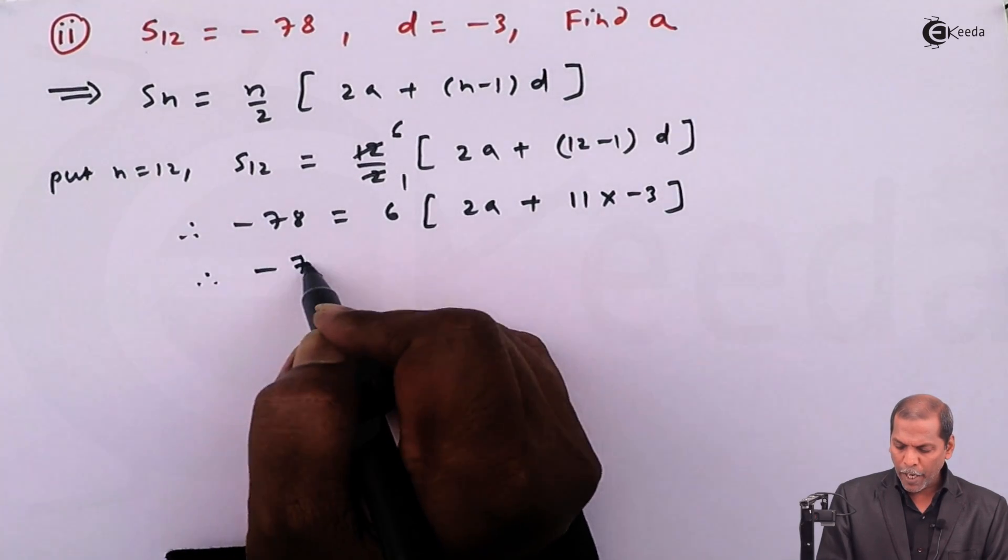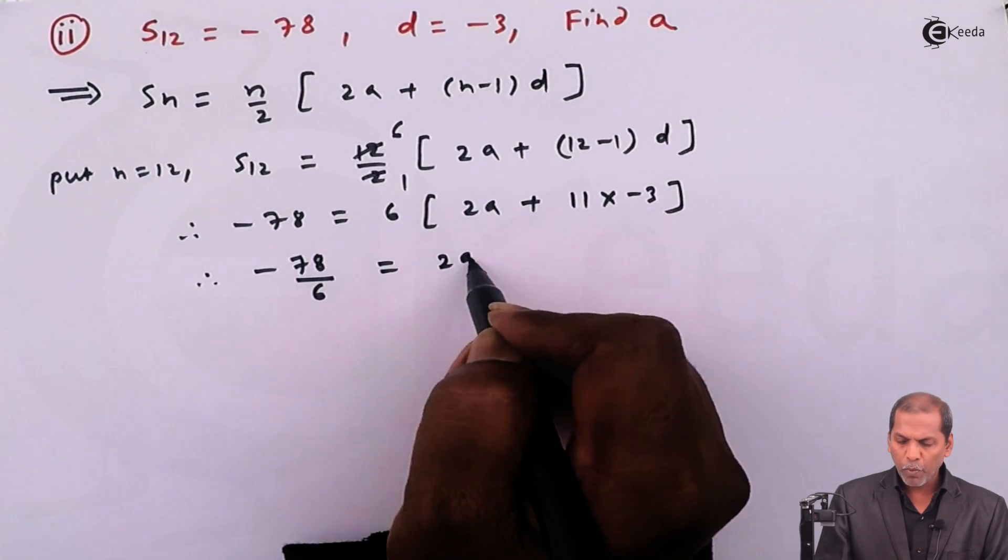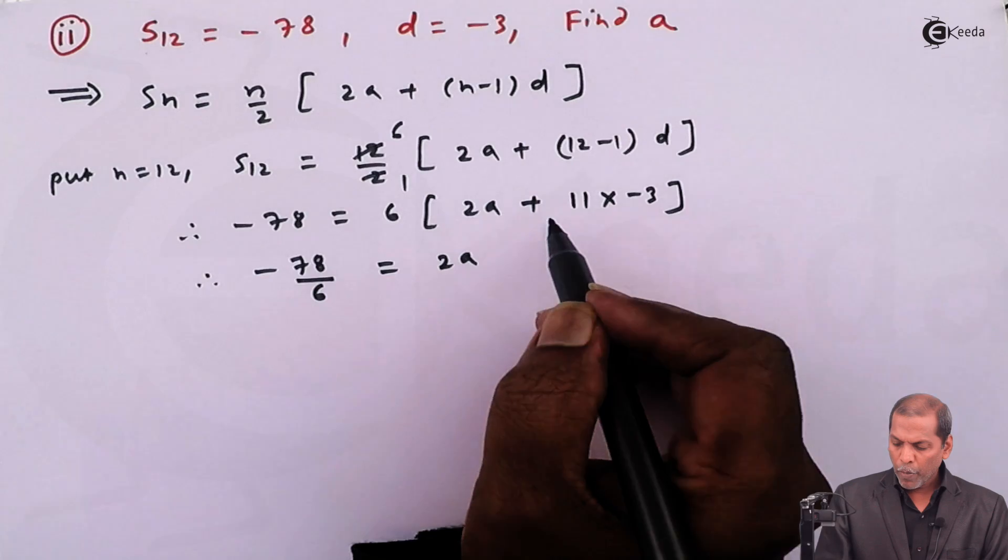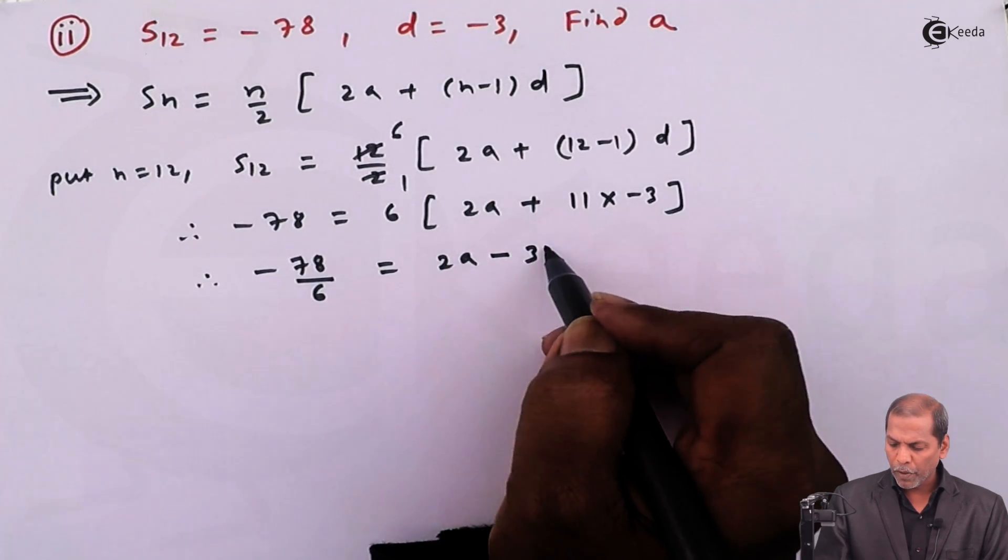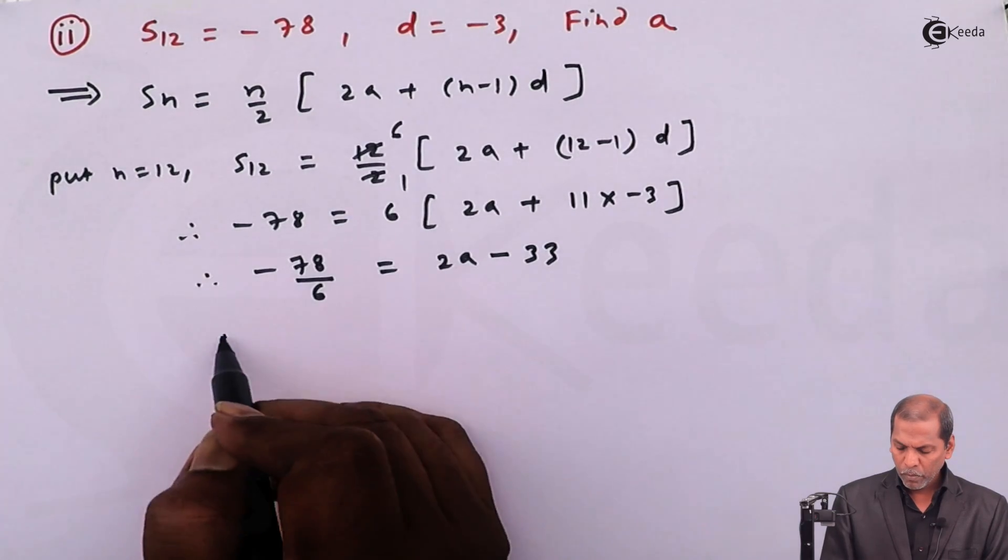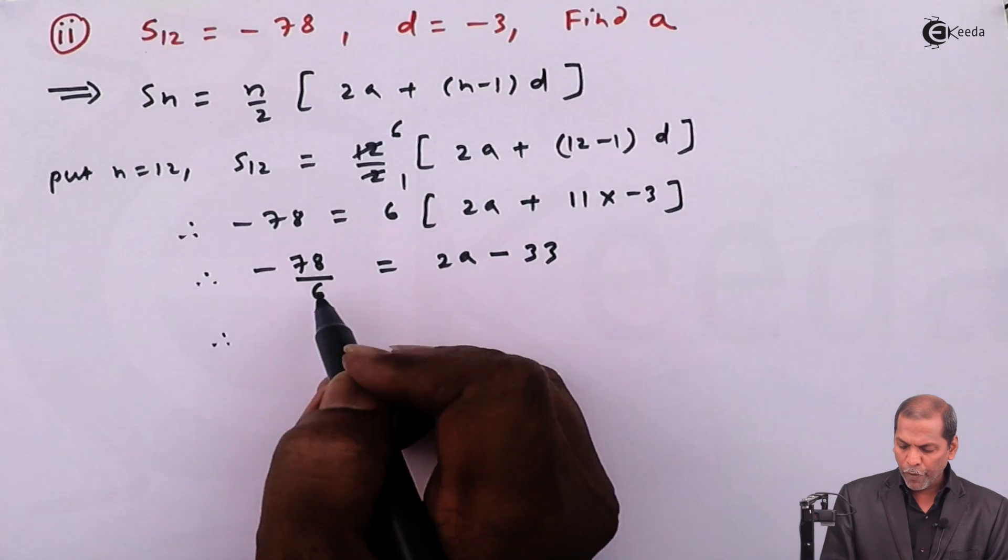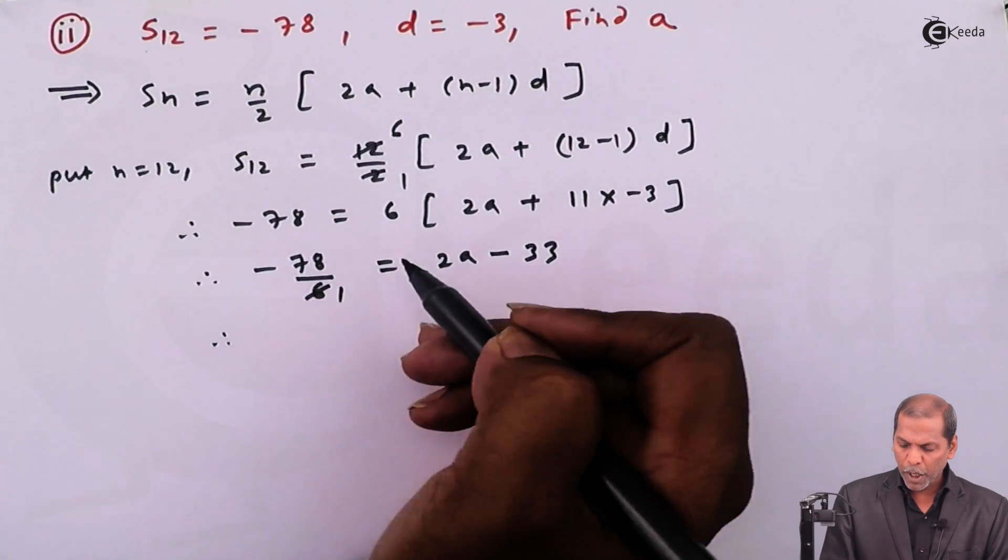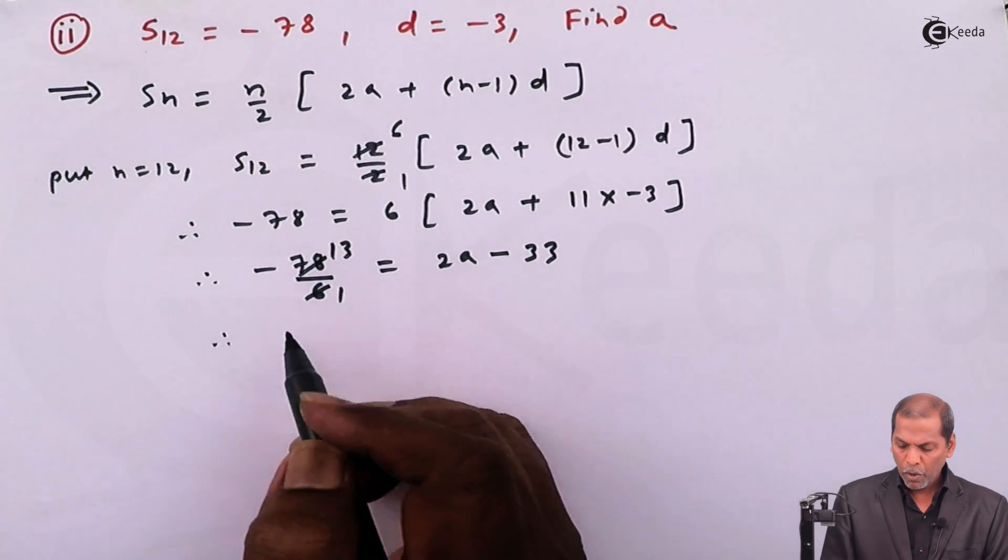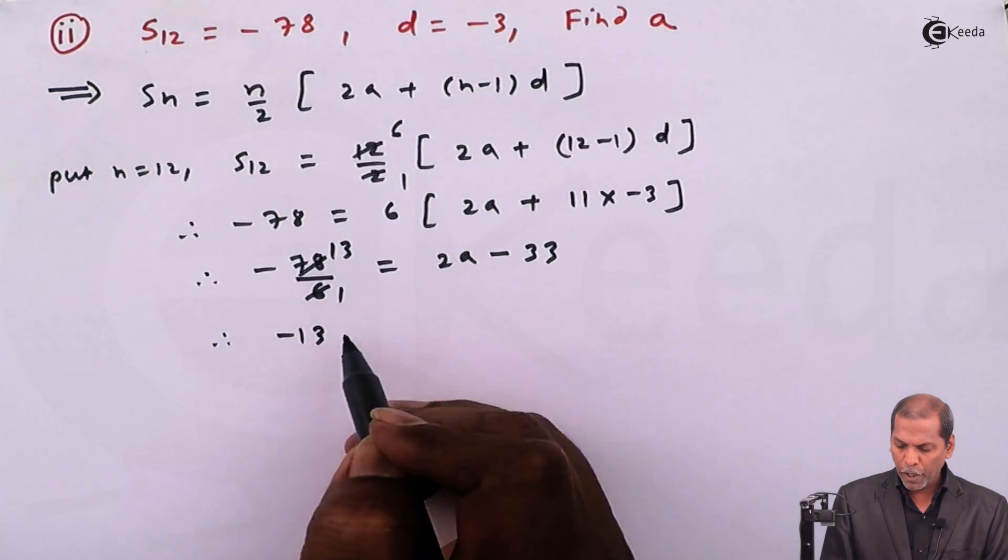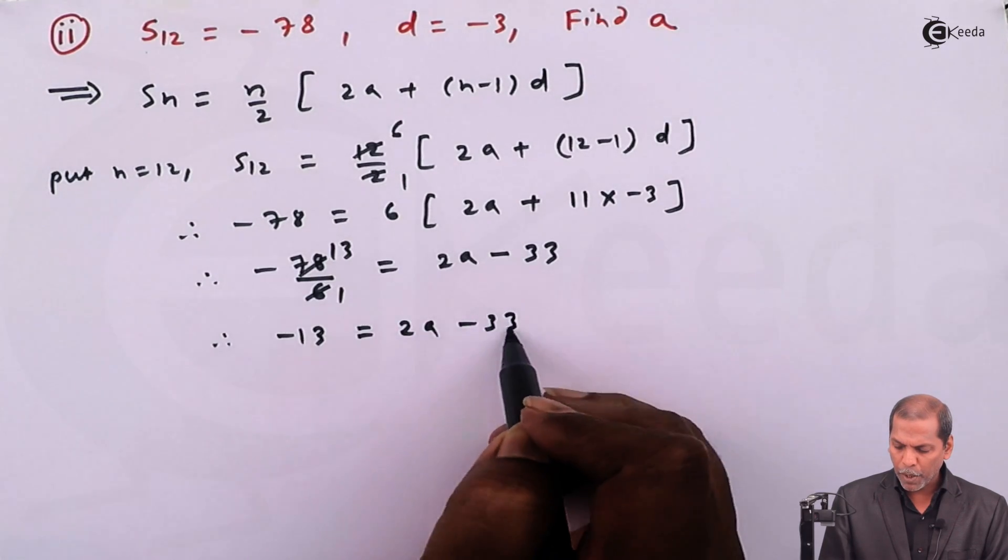Therefore minus 78 upon 6 equals 2a plus 11 times minus 3 which is 33. Then on LHS on simplification, 6 into 13 is 78, so minus 13 equals 2a minus 33.